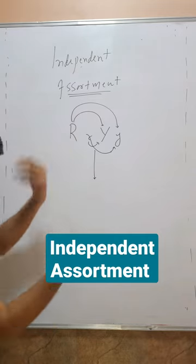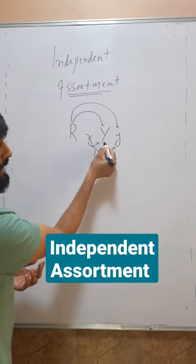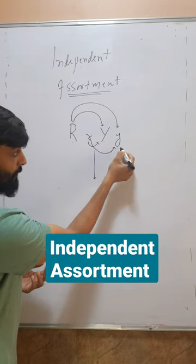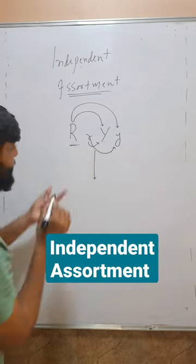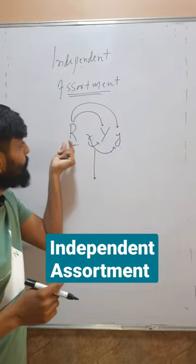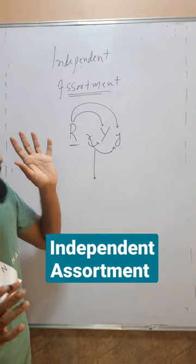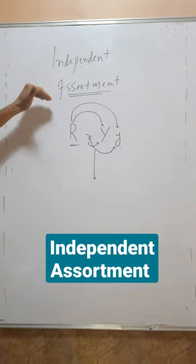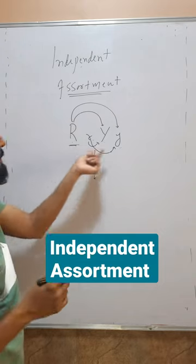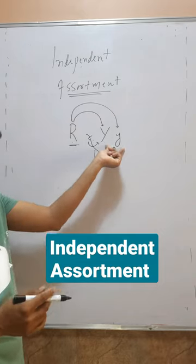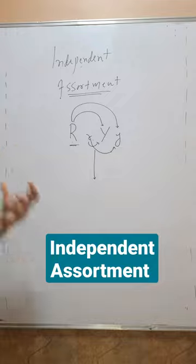Similarly, capital Y can form a gamete with capital R or small r, and small y can also form a gamete with either allele. So each allele is free to form a gamete with another type of allele. This means the alleles are not dependent on each other — this is called independent assortment.